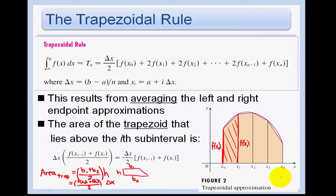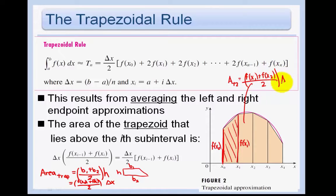Moving to the next trapezoid, T₂, you average the next two function values and multiply by delta x. You'll see that this is how the general formula is derived. The interior points like f(x₁) get counted in two adjacent trapezoids, which is why they appear with a coefficient of 2 in the formula. You don't necessarily need to memorize the formula — you can just think it out by adding up all the trapezoids each time.